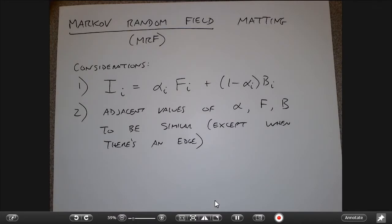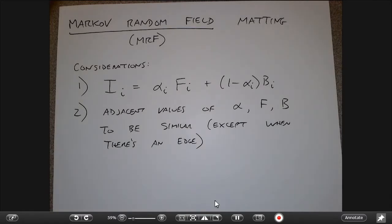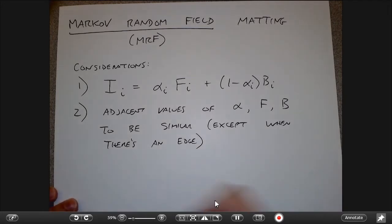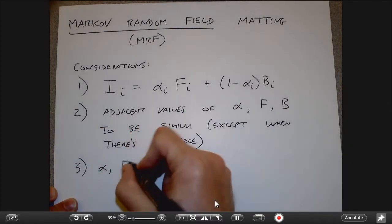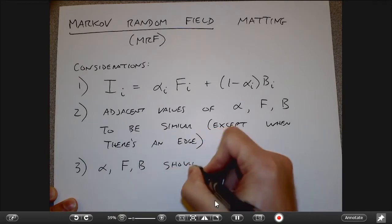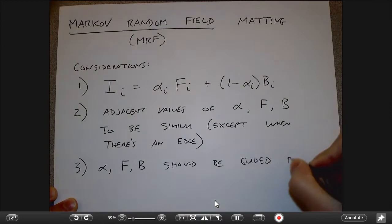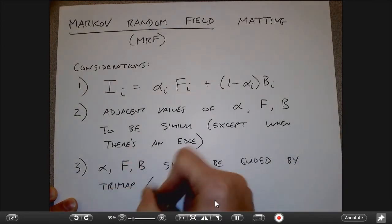For a smooth region like the whiteboard, the alpha values of all those pixels should be more or less the same. However, where the whiteboard transitions into the blue of my shirt — at that strong color edge — two adjacent pixels won't necessarily have similar alpha values because something has changed in the image. In general, pixels in the same neighborhood should have similar alpha values and similar foreground and background values.